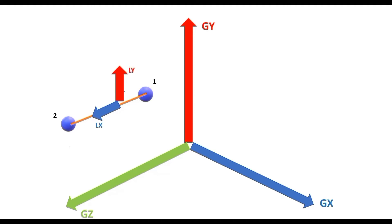Now we know that the cross product of the local X vector to the local Y vector will give us the positive direction of the local Z vector. Identifying by the right-hand thumb rule, the local Z direction is identified, and we see that the positive direction of the local Z-axis is aligned to but opposite to the positive direction of the global X.